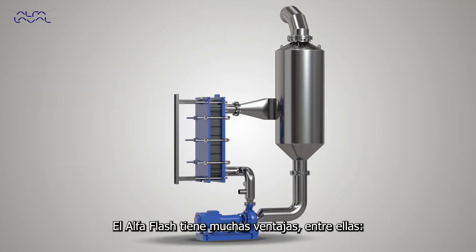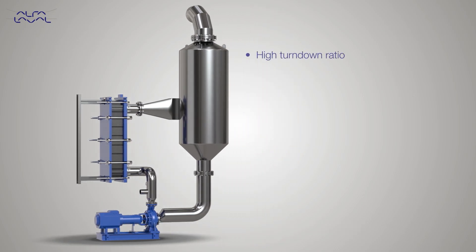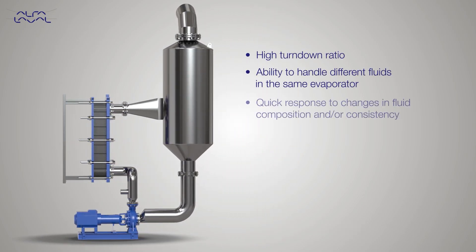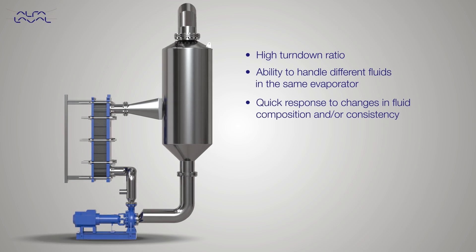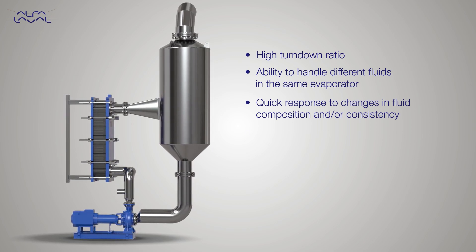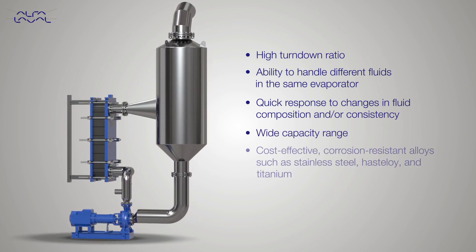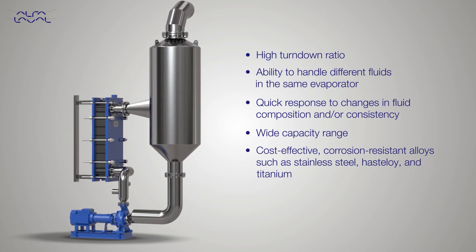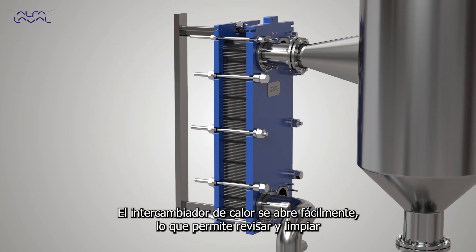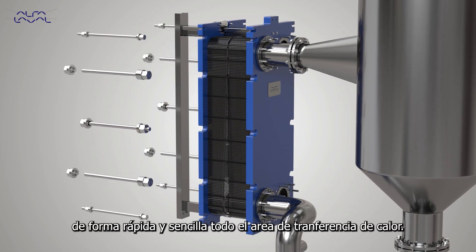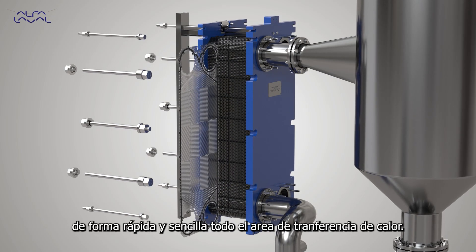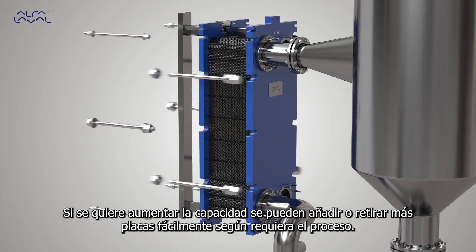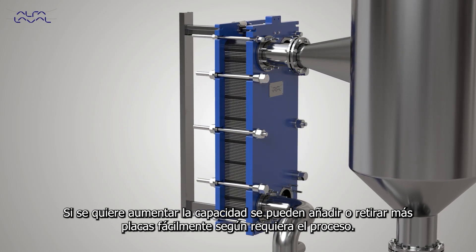The Alpha Flash has many advantages, including high turndown ratio, ability to handle different fluids in the same evaporator, quick response to changes in fluid composition and/or consistency, and wide capacity range. Cost-effective corrosion-resistant alloys such as stainless steel, Hastelloy, and titanium are available. The heat exchanger opens easily, enabling quick, easy inspection and cleaning of all surfaces. To increase capacity or to improve flow characteristics, plates can easily be added or removed according to process requirements.